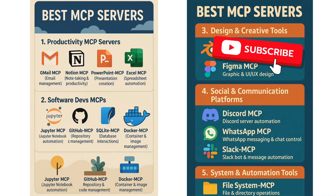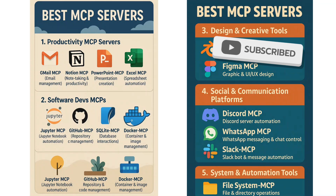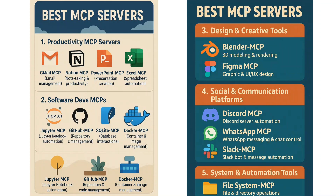First, we'll start with productivity MCP servers that can increase your productivity. The first one is Gmail MCP — it can send emails, read your emails, summarize your emails, and more, just using AI. You just need to connect with your Gmail account using the GSuite API, which I have already explained on my YouTube channel.